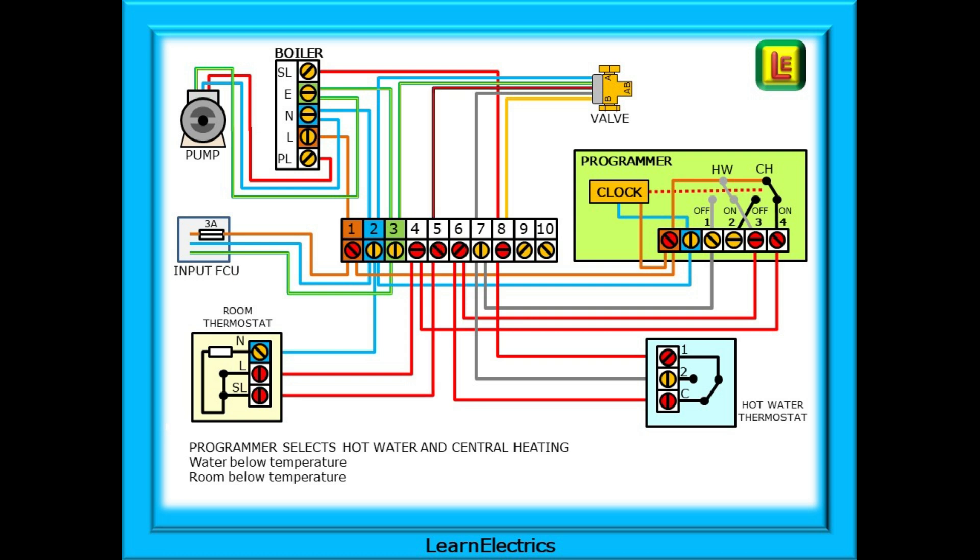Later the room thermostat changes position and connects L to SL. The 240 volts at L passes to SL and back up to the wiring center terminal number five and along the white wire to cause the valve to allow heating water to flow through the output port A as well as B. Wiring center terminal eight is already holding the boiler and pump in the on position.